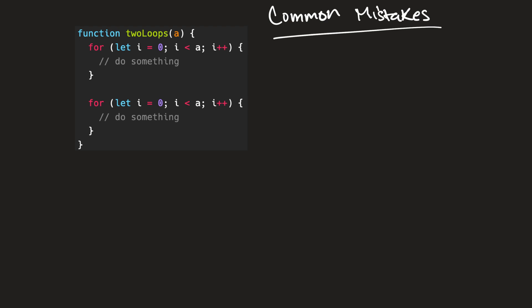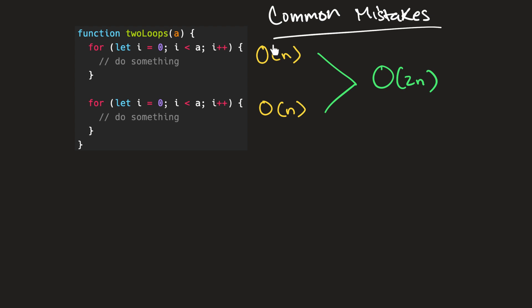It's actually quite simple. We have one for loop here and another for loop here. As we already know, this first for loop would be O(n) time complexity, and this one would also be O(n). So at this point we have two O(n)s, which could be translated to O(2n) — two times n. But if we remember from our previous lessons, we ignore constants. Multiplying n by two, two is just a constant, so we can drop it. This just becomes O(n).